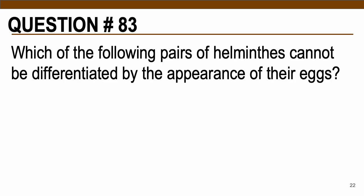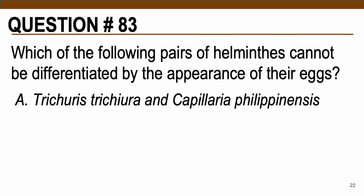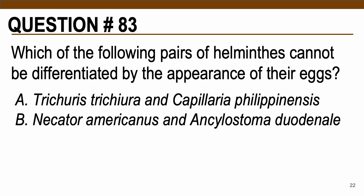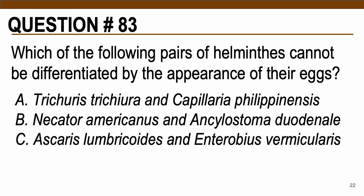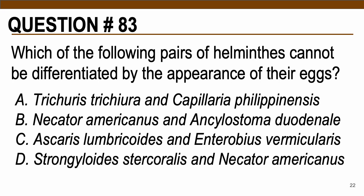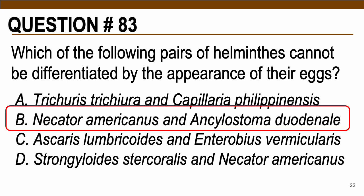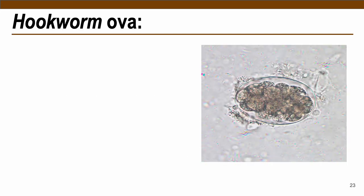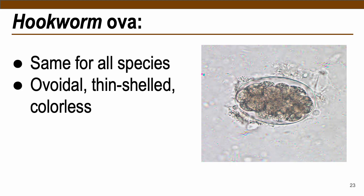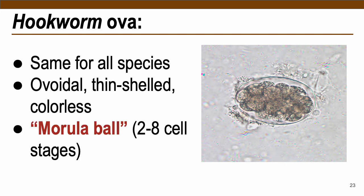Question number 83: Which of the following pairs of helminths cannot be differentiated by the appearance of their eggs? We are looking for parasites with very similar egg forms. The correct answer is letter B, Necator americanus and Ancylostoma duodenale — the hookworms. Remember, hookworm ova are all similar for all species: ovoidal, thin-shelled, and colorless eggs containing a morula ball with two to eight cell stages.